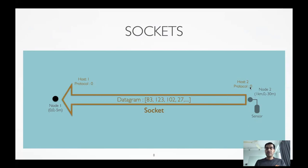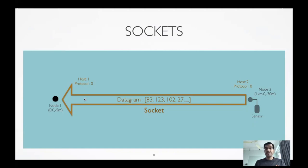So on protocol 0 on the sensor side — node 2 — the datagram goes over into the water and on node 1 it receives the physical layer packet, which gets decoded into a datagram. When the node 1 stack sees it's for protocol 0, it looks for a program waiting for a socket message on protocol 0, and if found, delivers the data to it.